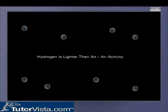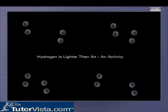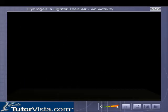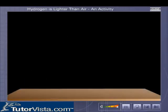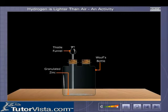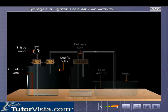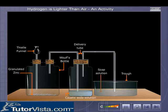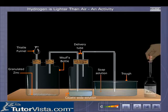Hydrogen is lighter than air. To prove that hydrogen is lighter than air, we need to prepare hydrogen gas in the laboratory. Zinc granules are taken in a Woulf's bottle and the apparatus is arranged as shown, using dilute sulfuric acid.